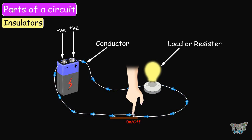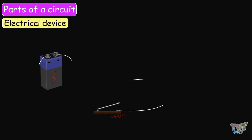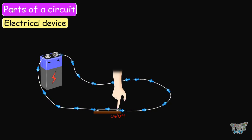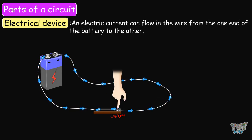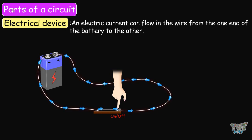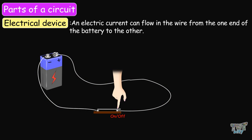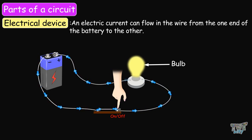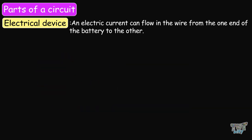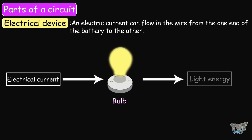Now let's learn more about the load or resistor — the electrical device we attach in the wire. An electric current can flow in the wire from one end to the other, but nothing useful happens; the wire just gets hot and the battery goes flat. To do something useful with the electric current we need to put an electrical component in the circuit, such as a bulb that uses the electrical current to make it glow. This electrical device converts electrical current into another form of energy — the light bulb converts it into light energy.